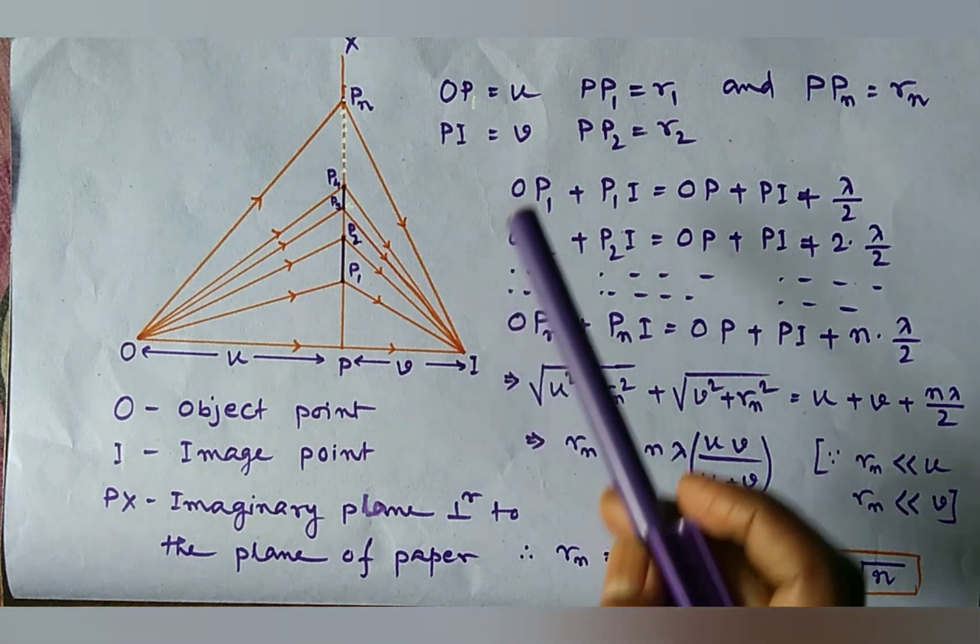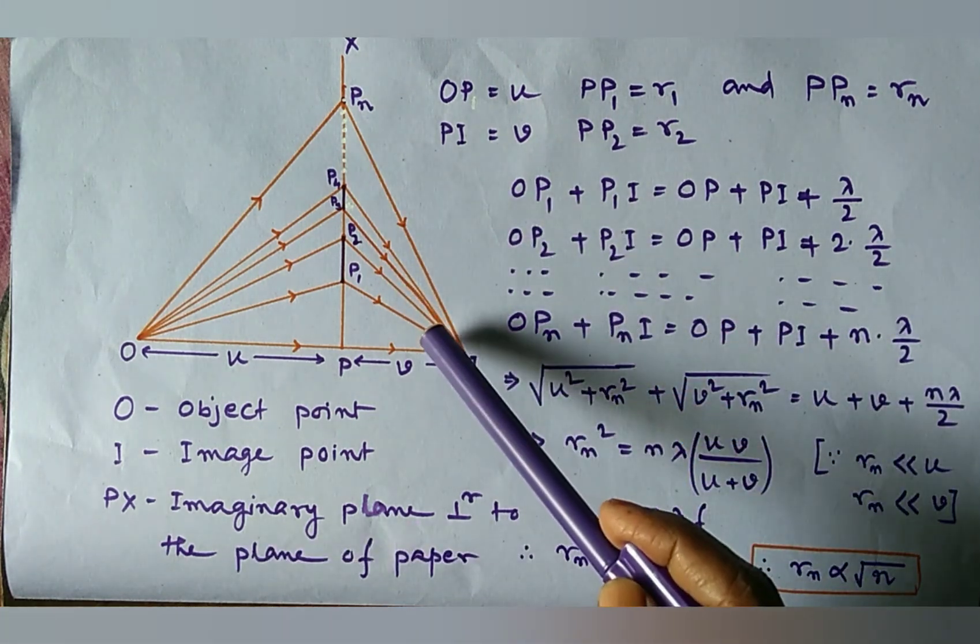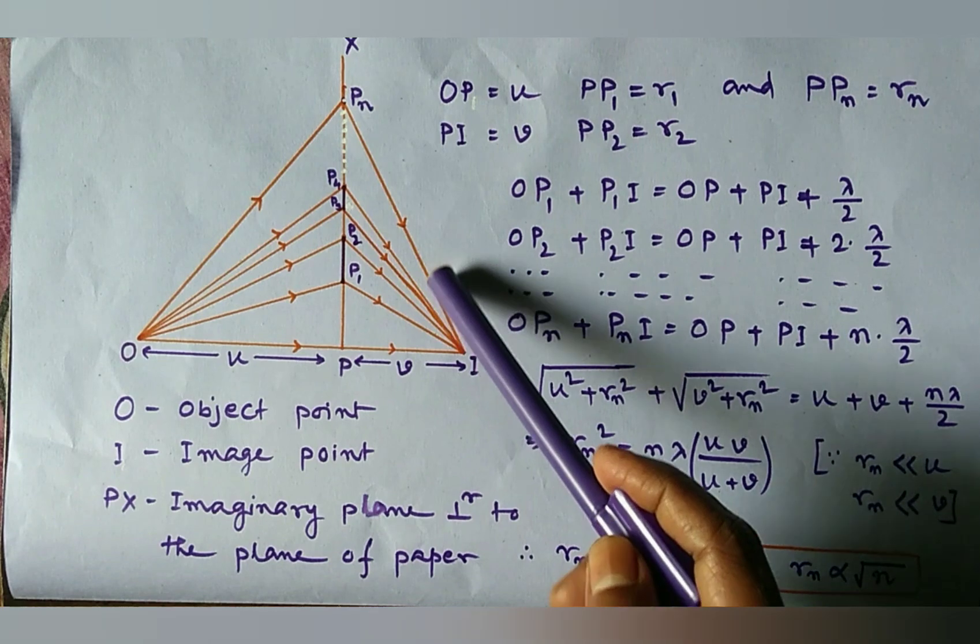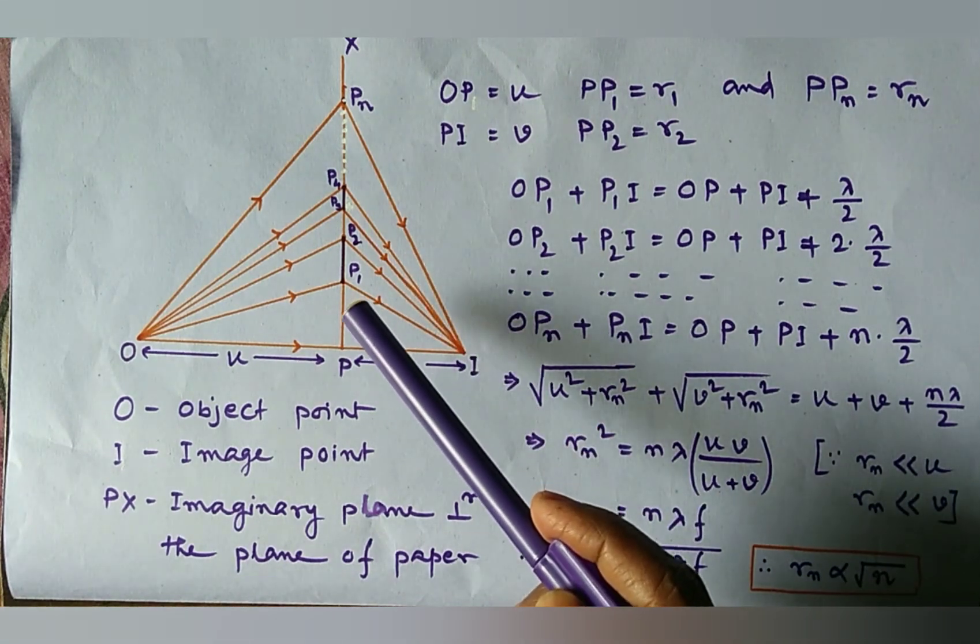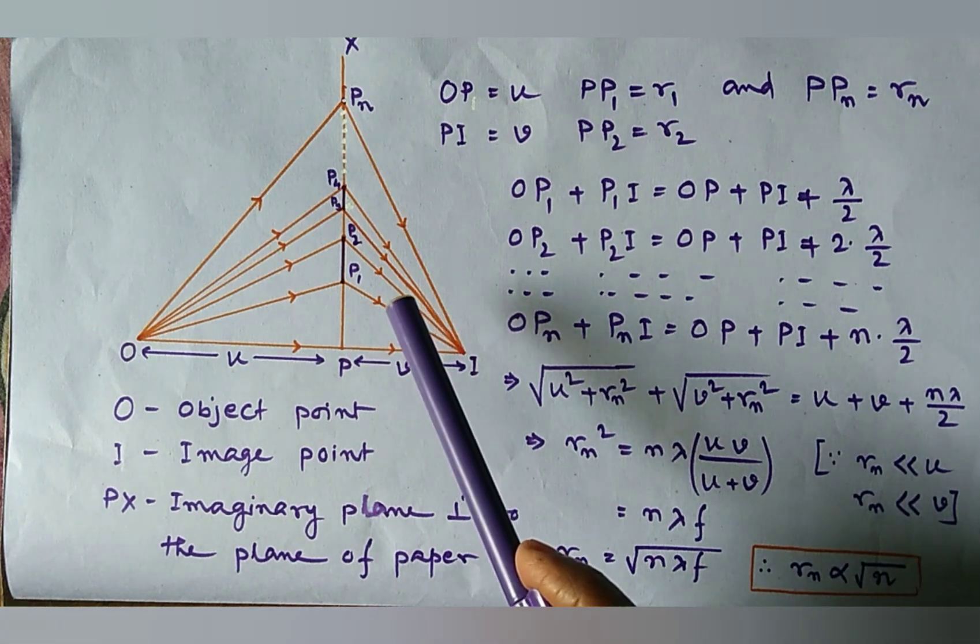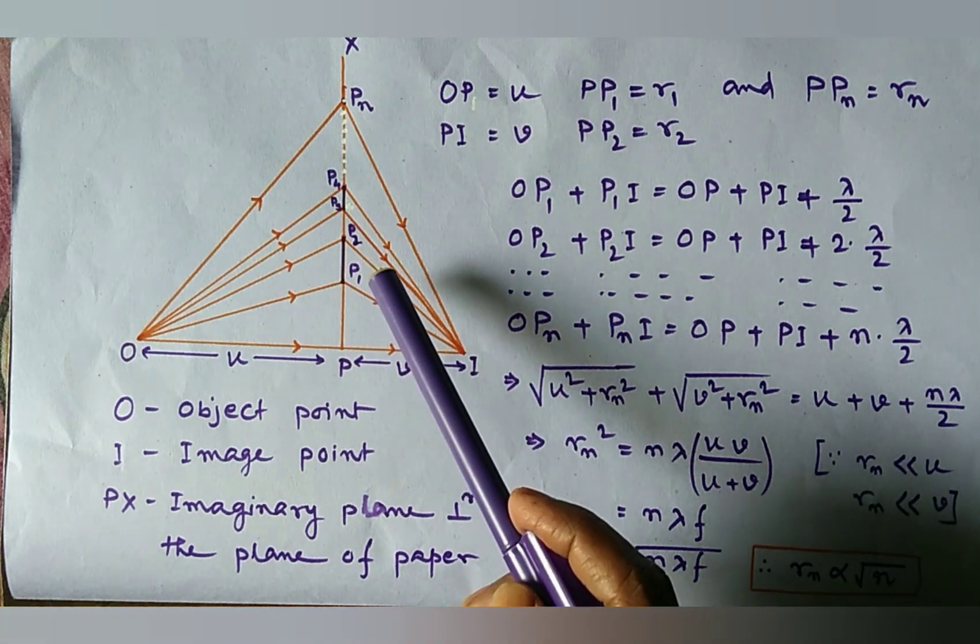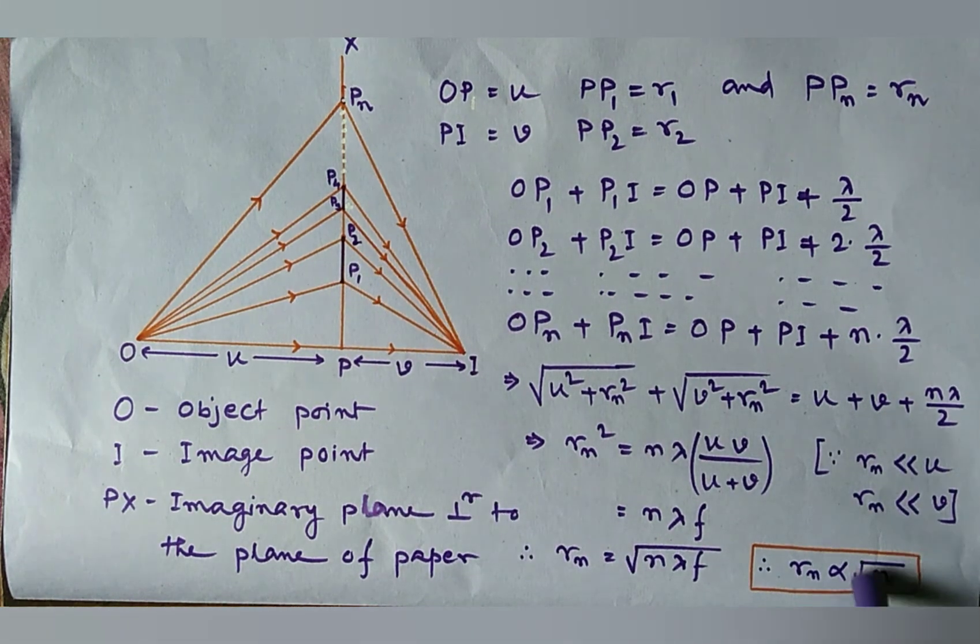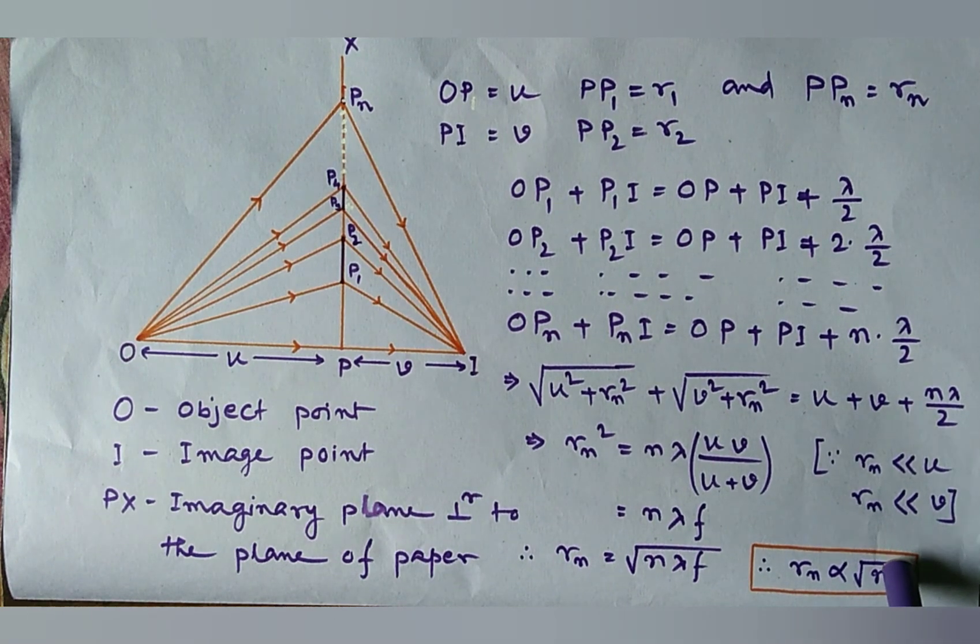And in the beginning of my lecture we say this that the circles are drawn on the white paper taken the radii proportional to the square root of natural numbers.